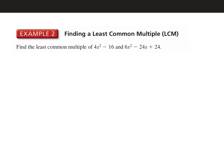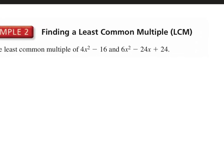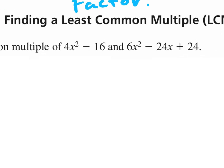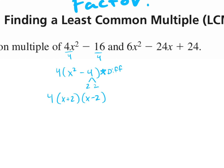Let's look at example 2: find the least common multiple of 4x squared minus 16 and 6x squared minus 24x plus 24. Step one is to factor. For 4x squared minus 16, it's a difference of squares, but first take out the GCF — always take out the GCF first. We take out a 4 and are left with x squared minus 4, which factors further as x plus 2 times x minus 2. Keep the GCF outside.